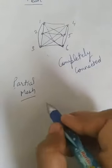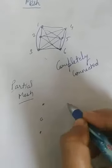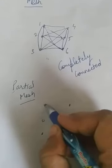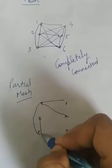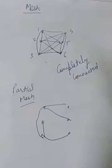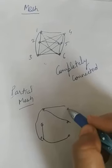For example, suppose you have one, two, three, four, five, six - whichever wires you want to keep, keep them; whichever you want to remove, remove them. So this can be a partial mesh topology, or if somebody needs